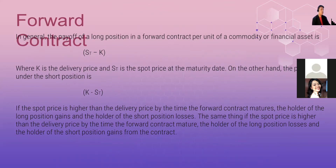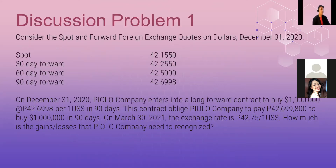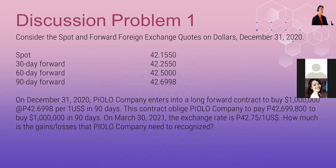To better illustrate the forward contract, let's take discussion problem number one. In a forward contract, we have an agreement to purchase at a fixed future price. In forward contracts, there's this forward foreign exchange quotes. The requirement is: how much are the gains or losses that Piolo Company needs to recognize?